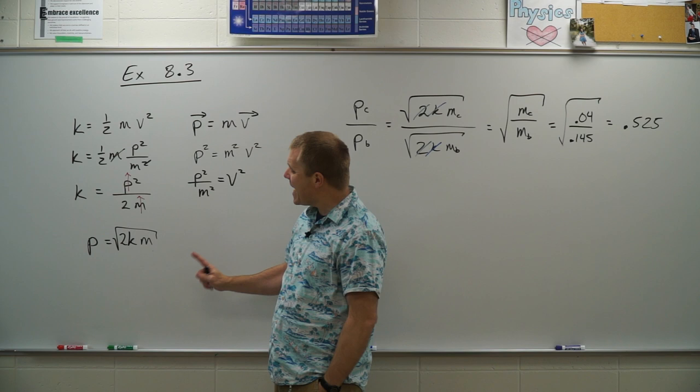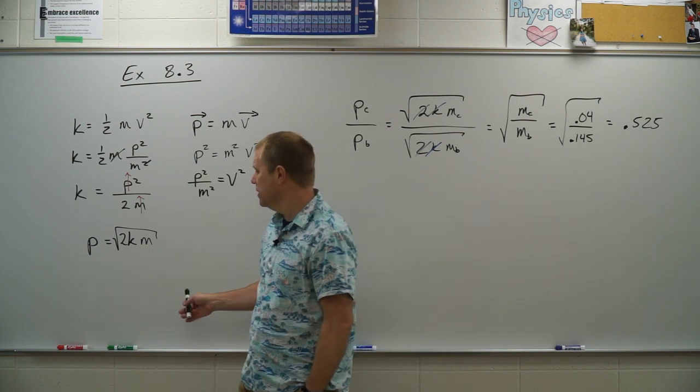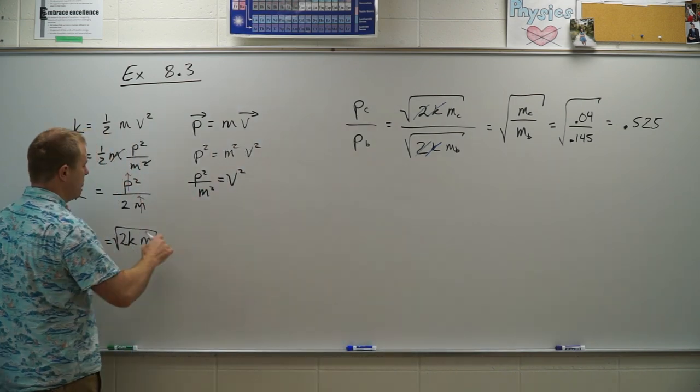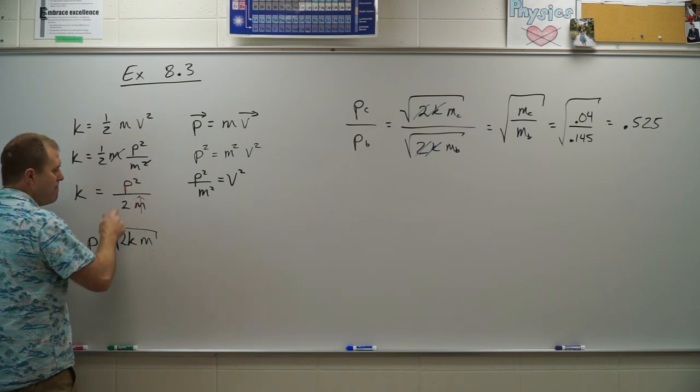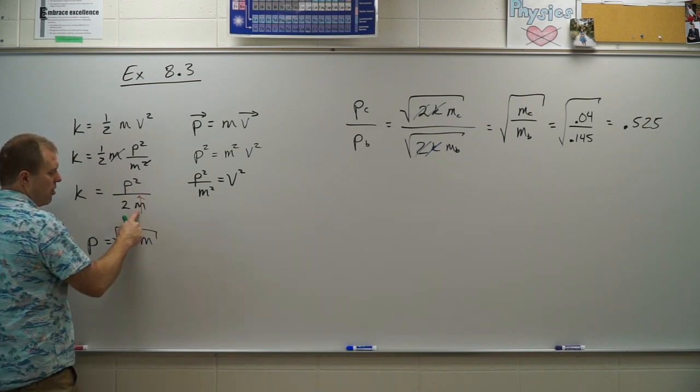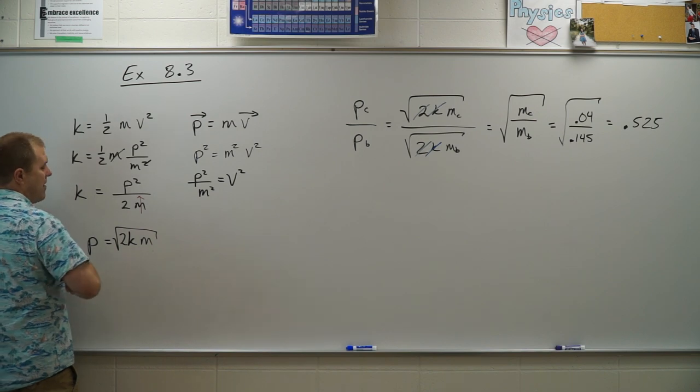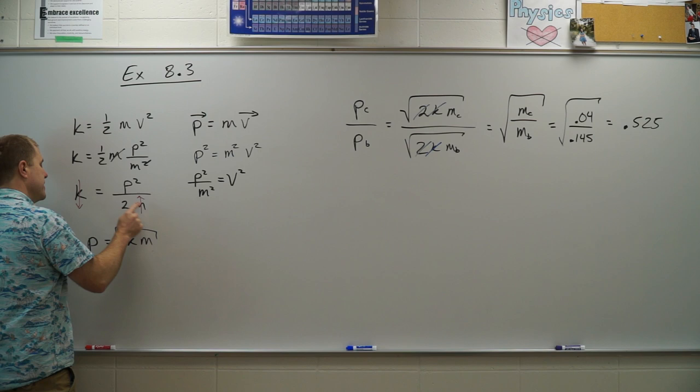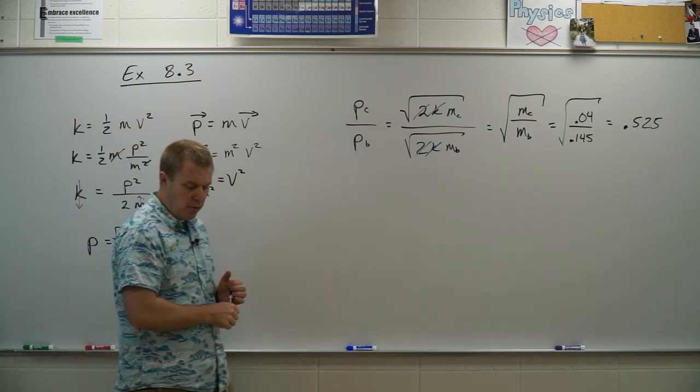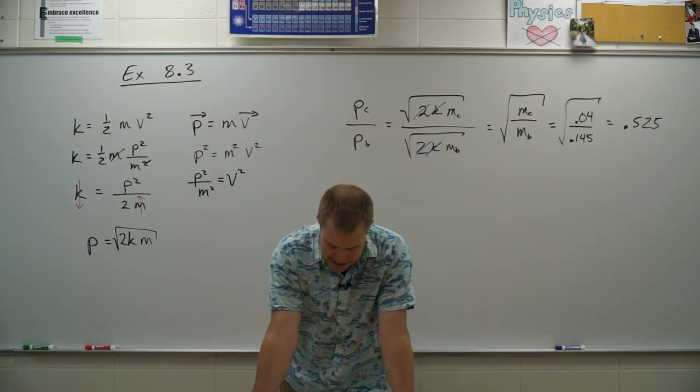So if they have the same momentum, let's try this one again over here. If they have the same momentum, the one with the larger mass is going to have a smaller kinetic energy. So that means the man has a smaller amount of kinetic energy than the woman. The woman has a greater kinetic energy than the man.